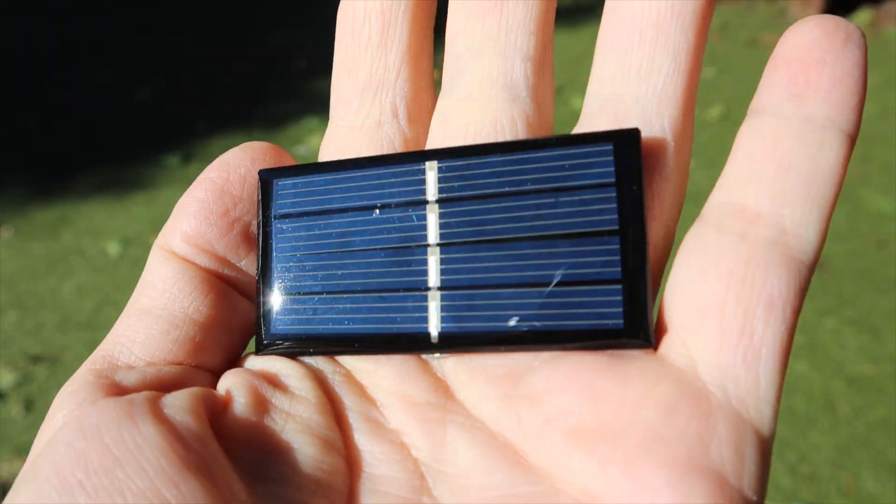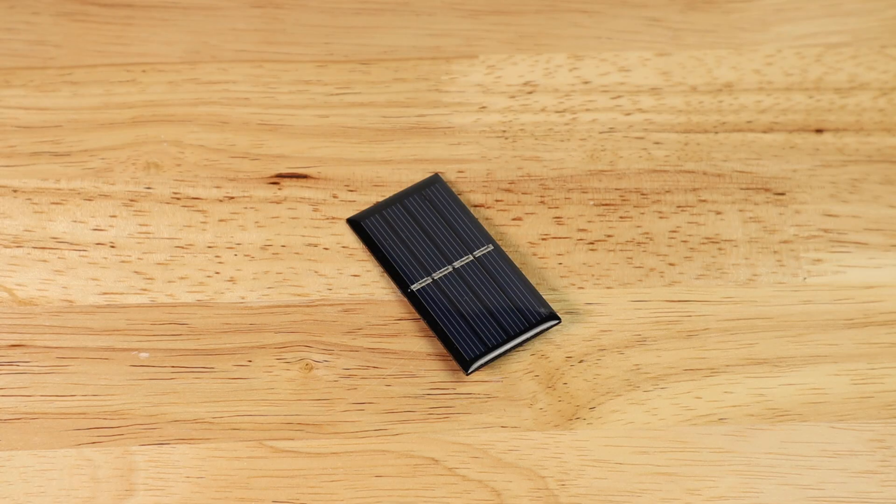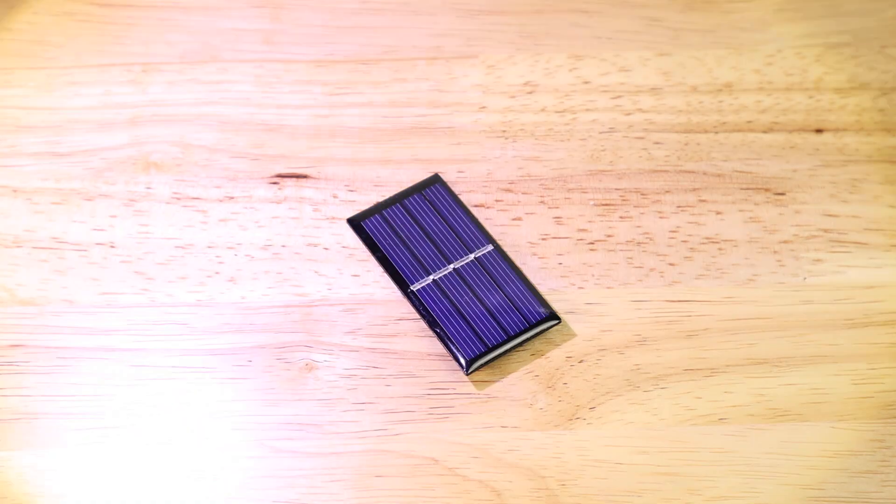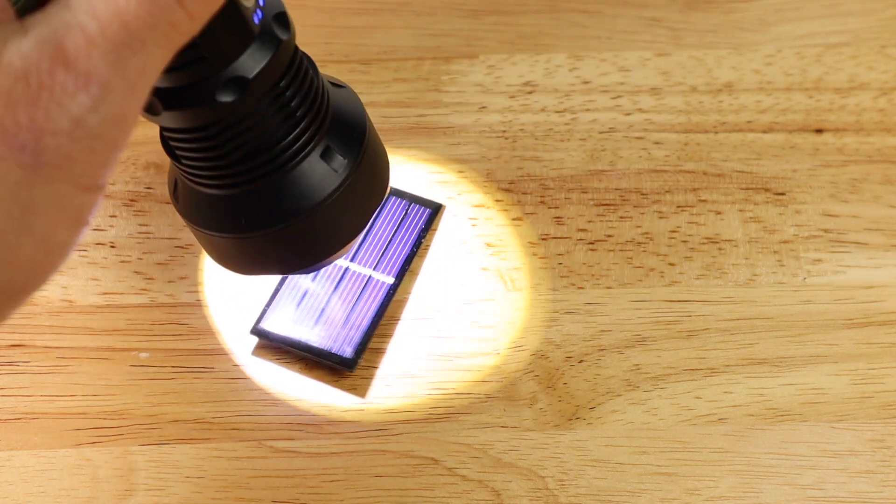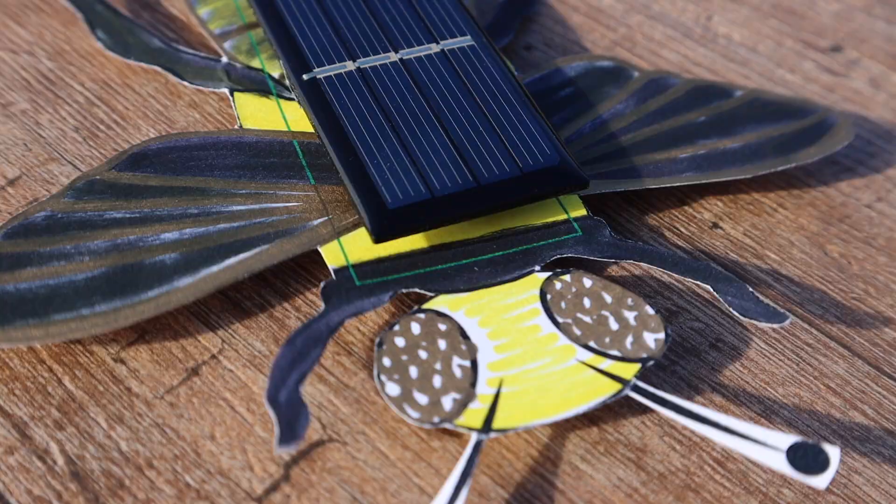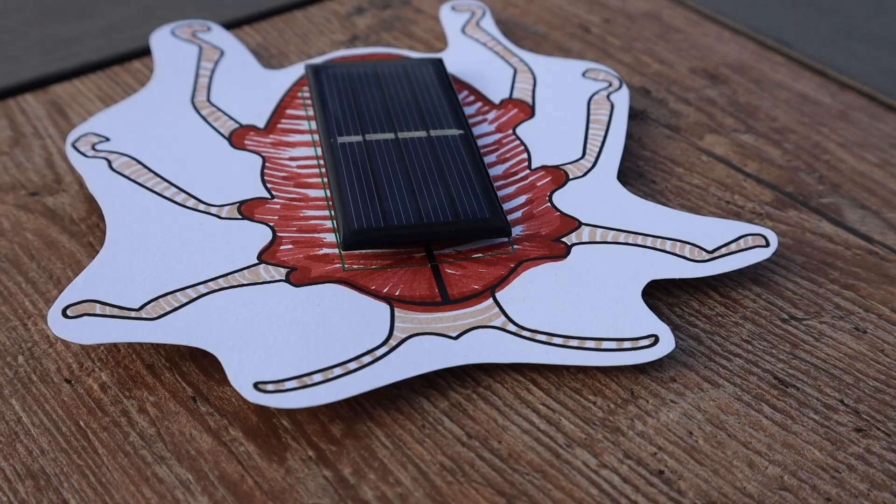The more light that hits the solar cell, the more vibration you'll feel. So if your flashlight doesn't turn it on, move the flashlight closer to the solar cell. Did it start vibrating now? Same thing goes with the sun. You'll feel more vibration on a sunny day than a cloudy day.